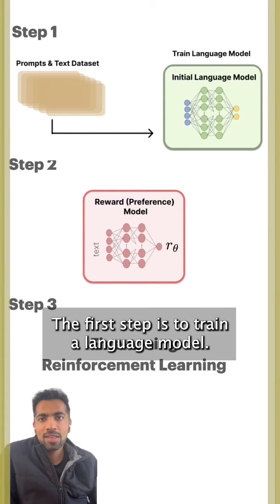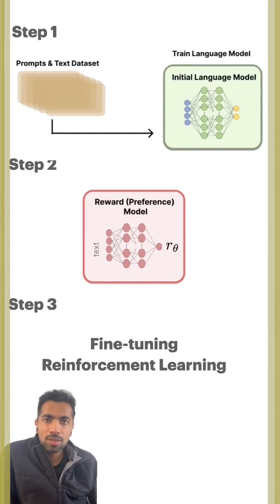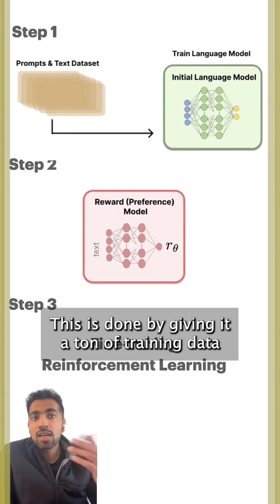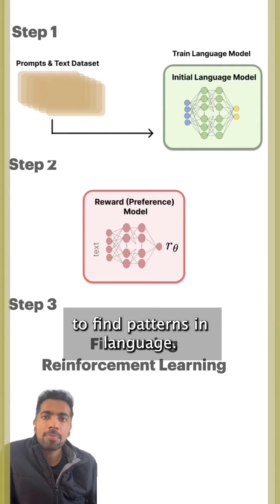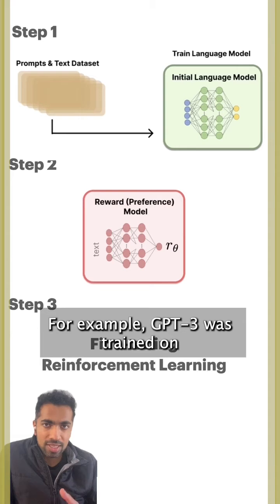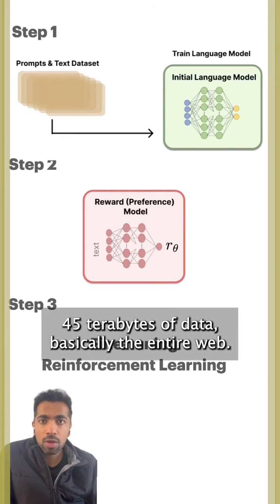The first step is to train a language model. This is done by giving it a ton of training data to find patterns in language. For example, GPT-3 was trained on 45 terabytes of data, basically the entire web.